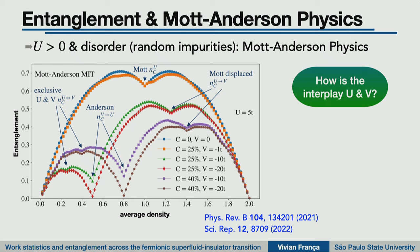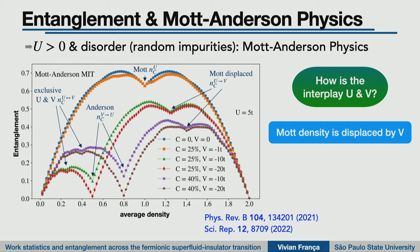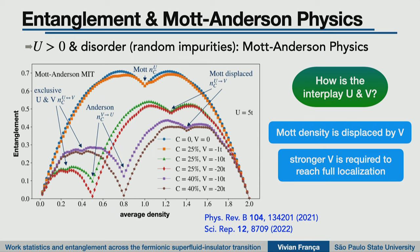The main results of the Mott-Anderson interplay: the minimum related to Mott is displaced — the Mott density where we find the entanglement signature minimum shifts. We also see that the minimum related to zero entanglement (Anderson localization) requires a stronger V to reach full localization. So you need stronger disorder to get zero entanglement when interaction is present. These are the general signatures we found in recent years by using entanglement measures in regimes where we face a quantum phase transition.